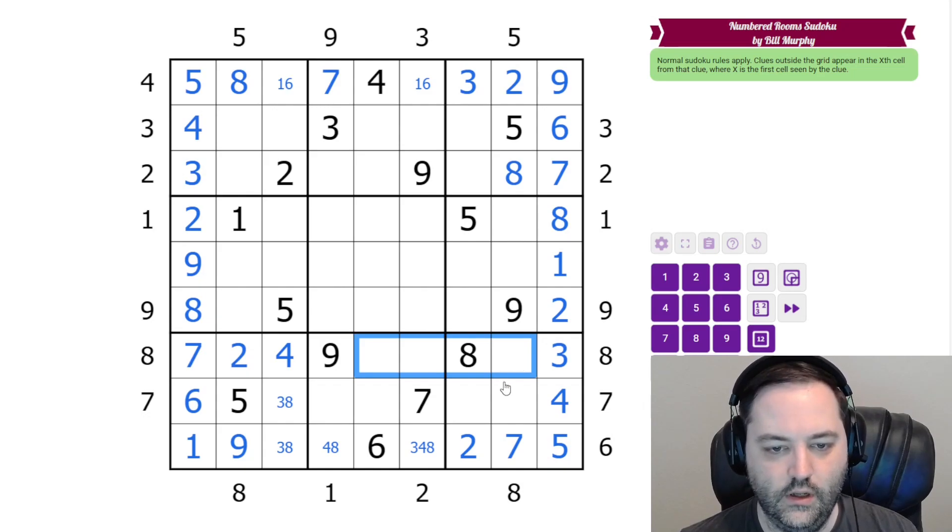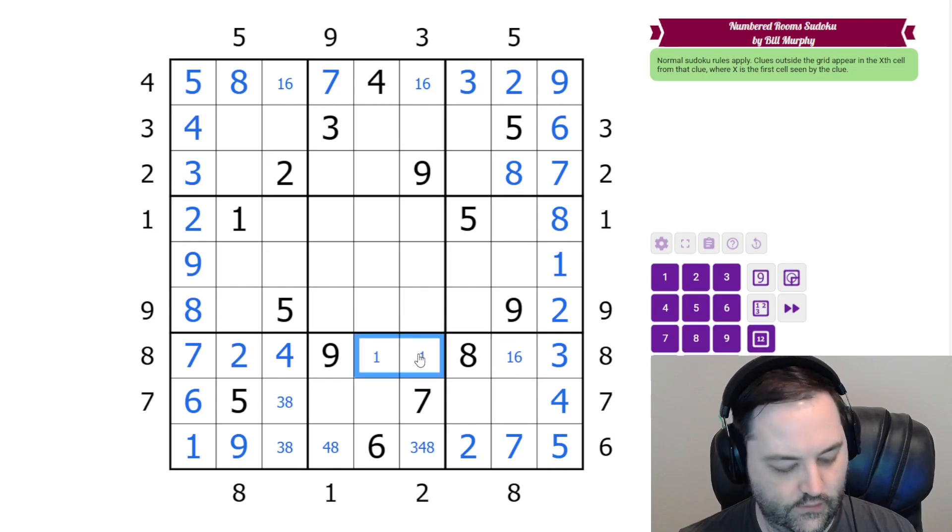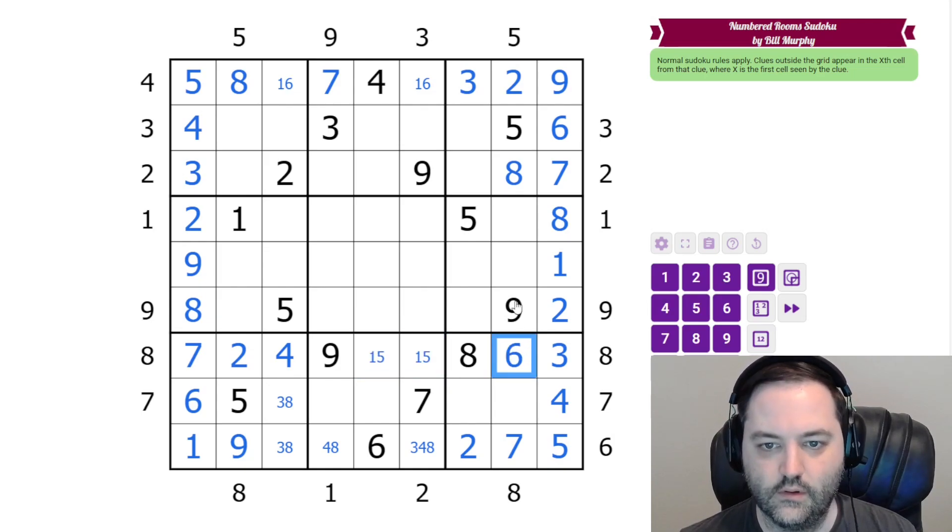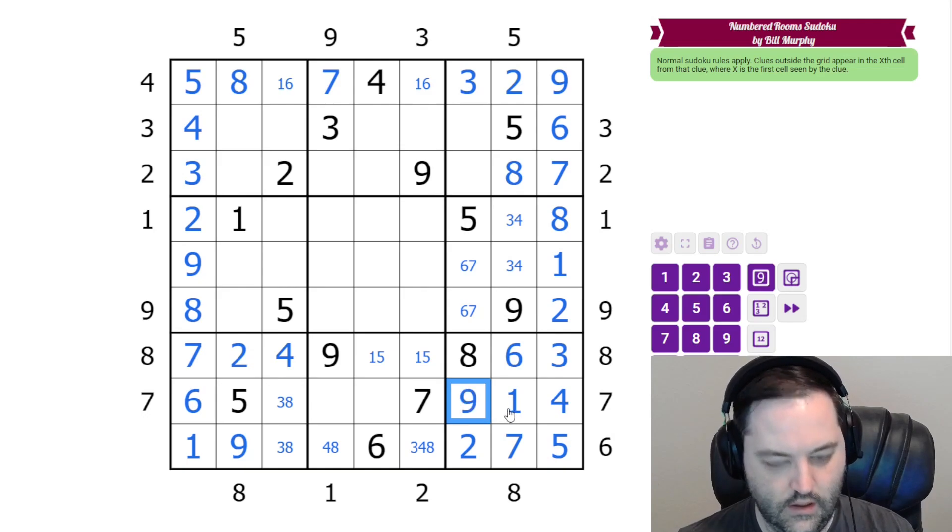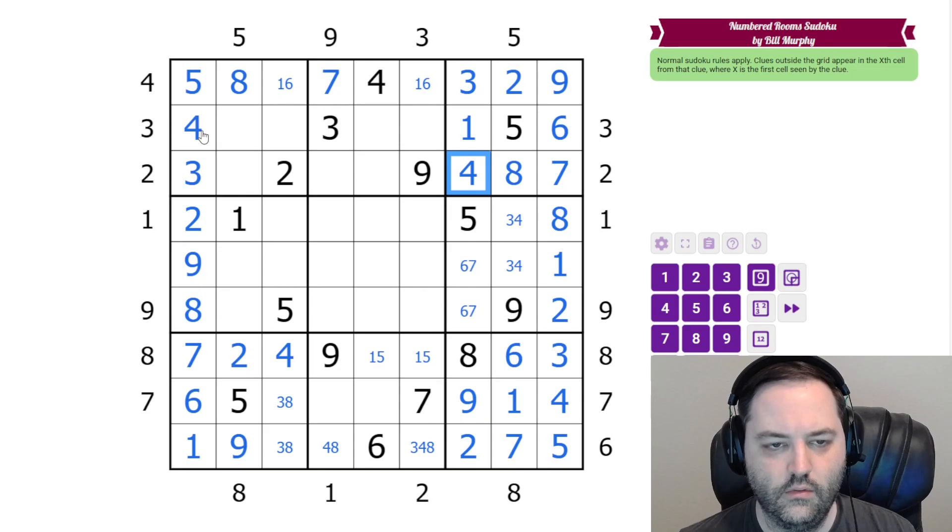This row we need 1, 5, and 6. This can't be 5. Neither of these can be 6, so this is a 6. This column we need 1, 3, 4. There's a 1 here, so 1 goes there. These in the box are 6 and 7. This is a 9. This is a 9. And these are 1 and 4. We know the order from the 4 in the row.